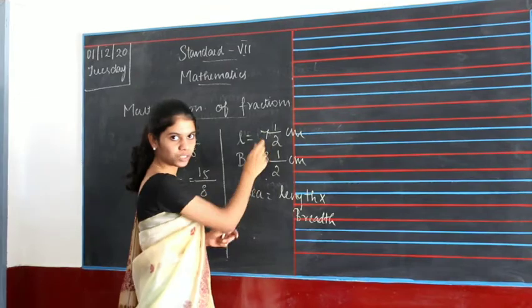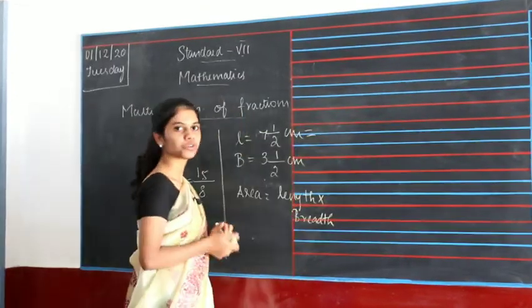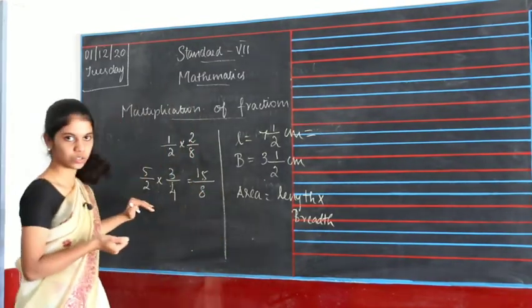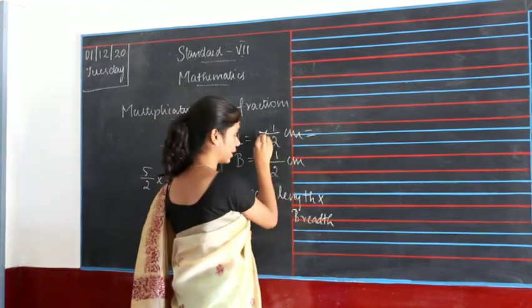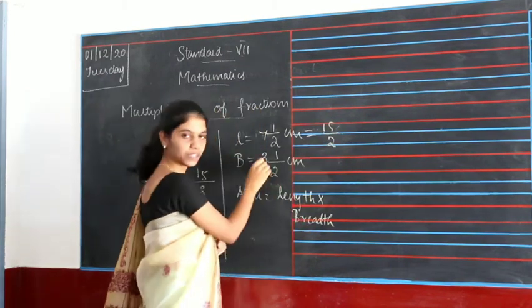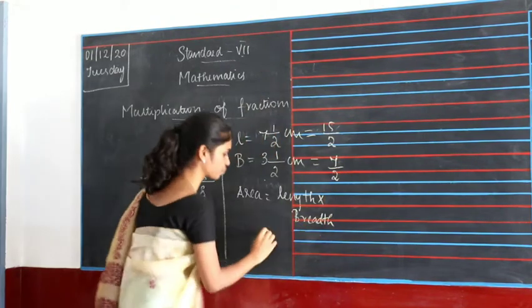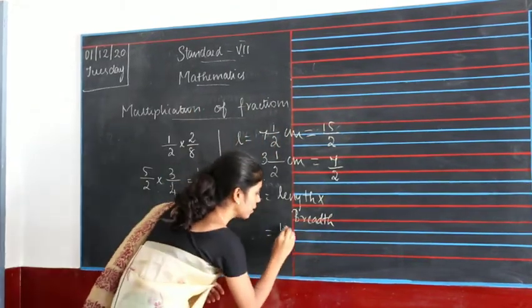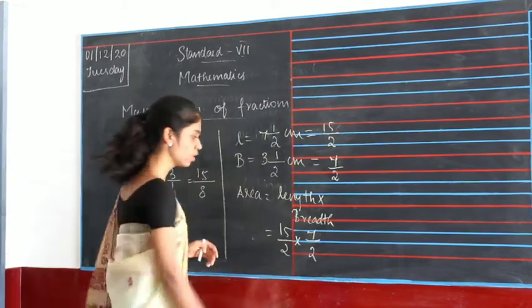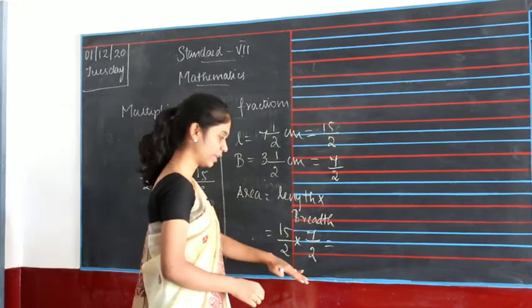We should convert this into a normal fraction and then multiply it. For multiplication, you don't need it to be a like fraction. So 7 and 1/2 becomes: 2 twos are 14, 14 plus 1 is 15 by 2. And 3 and 1/2 becomes: 2 threes are 6, 6 plus 1 is 7, so 7 by 2. Now multiplying 15 by 2 into 7 by 2 — multiply numerator with numerator and denominator with denominator.